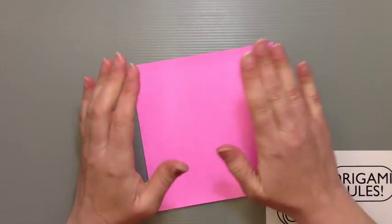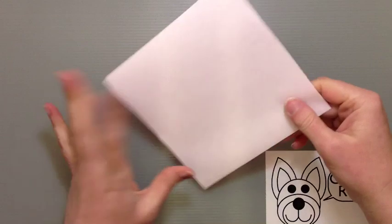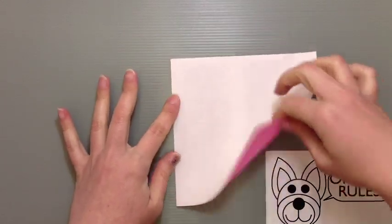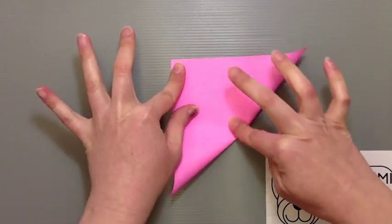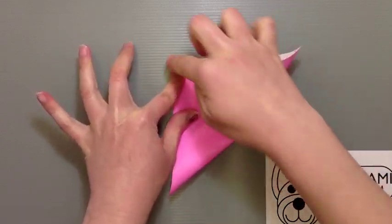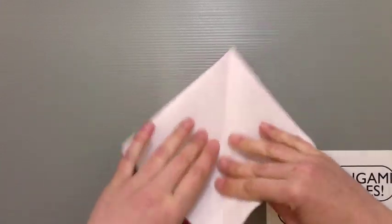What we're going to do is start here actually with our water bomb base. With my color side facing down, I can just create my diagonal creases by folding in half here to make a big triangle. Just start right there from the tip right down straight across and then smooth out to the edges. Do that both ways.